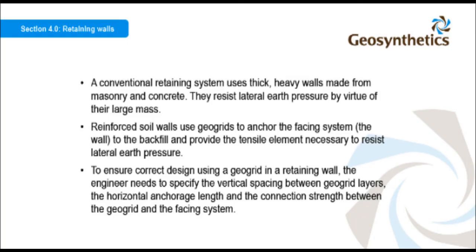A conventional retaining system uses thick heavy walls made from masonry and concrete. They resist lateral earth pressure by virtue of their large mass. Reinforced soil walls use geogrids to anchor the facing system to the backfill and provide the tensile element necessary to resist lateral earth pressure. To ensure correct design using a geogrid in a retaining wall, the engineer needs to specify the vertical spacing between geogrid layers, the horizontal anchorage length, and the connection strength between the geogrid and the facing system.